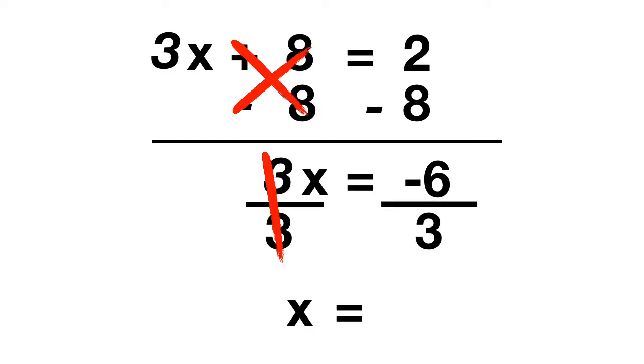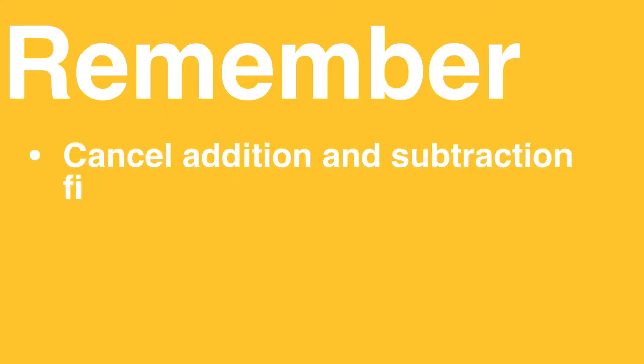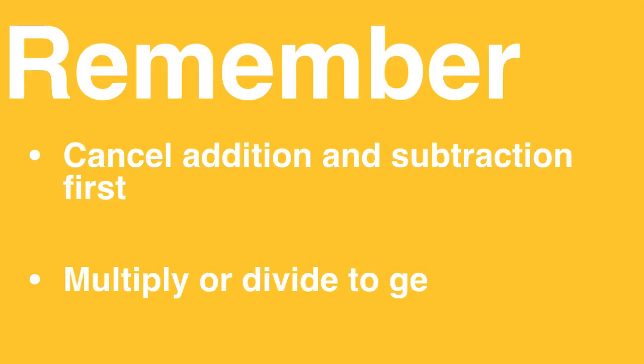So remember: when you're solving an equation with lots of pieces, cancel the addition or the subtraction first. Only after doing that should you multiply or divide to get the x all alone.